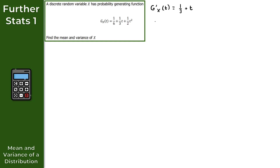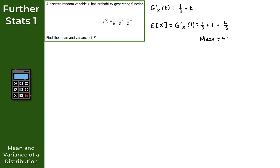For the mean, that's the expectation of x, we evaluate g prime of x when t equals 1. Substituting t equals 1, we get 1 over 3 plus 1, which is 1 over 3 plus 3 over 3, giving us 4 over 3. So the mean of our random variable x is equal to 4 over 3. We also need the variance of x.